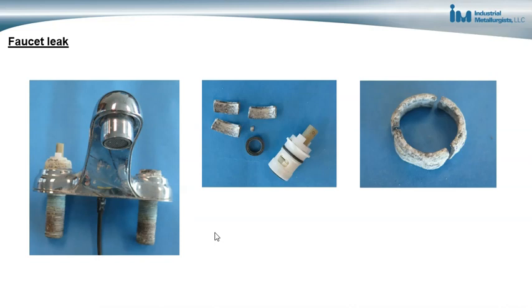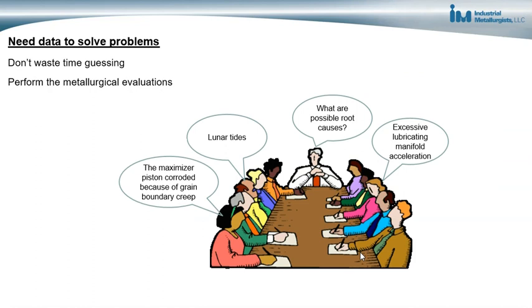One key takeaway: we need data to solve problems. Whether it's a manufacturing failure, a component failure during use or testing, or an insurance issue, people often get in a room and try to guess at the root cause — that's a really inefficient way to work, and problems can linger for a long time. Don't waste time guessing; perform the metallurgical evaluations, get the information, determine the root cause, and fix the problem.